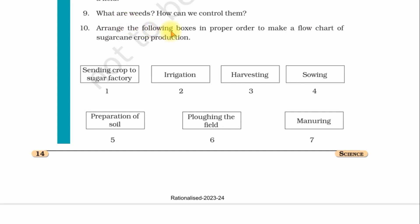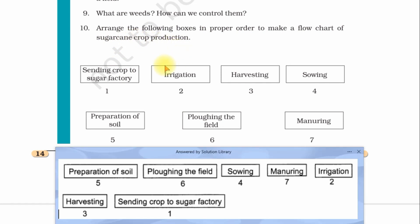Question number ten: Arrange the following boxes in proper order to make a flow chart of sugar cane crop production. Answer: First, you have to prepare the soil, preparation of soil, then ploughing the field, six number, then sowing, four number, then manuring, seven number, then irrigation, two number, then harvesting, three number, and lastly sending crop to the sugar factory.